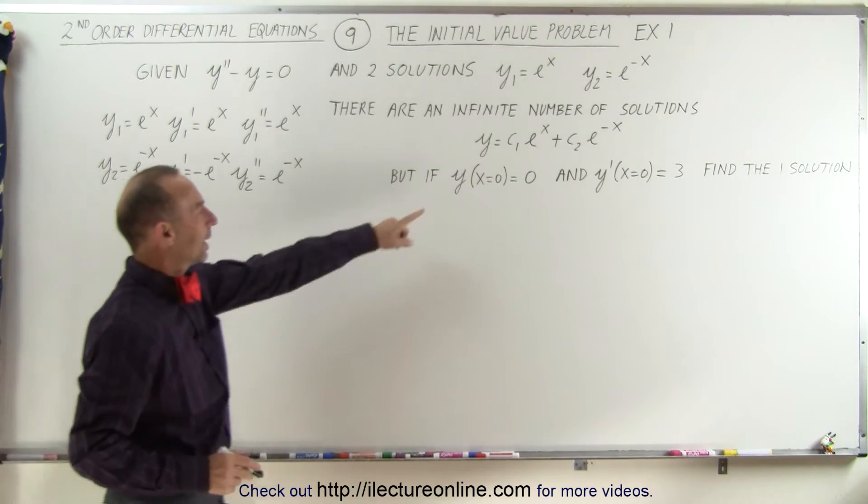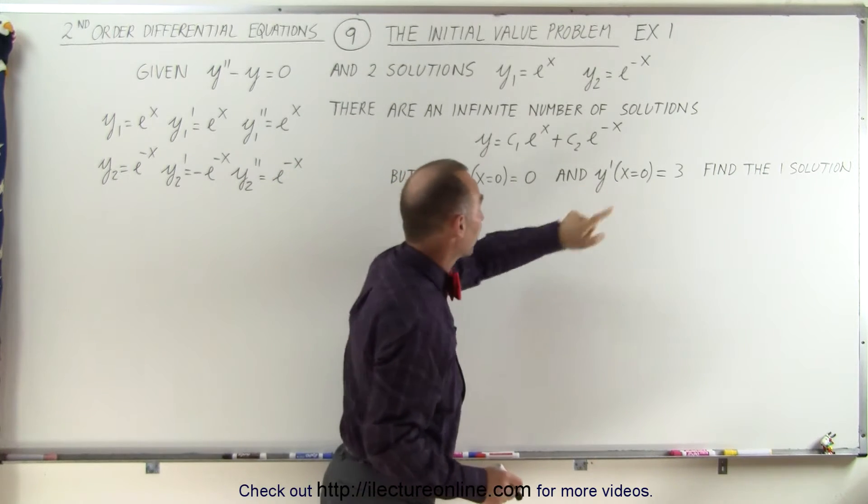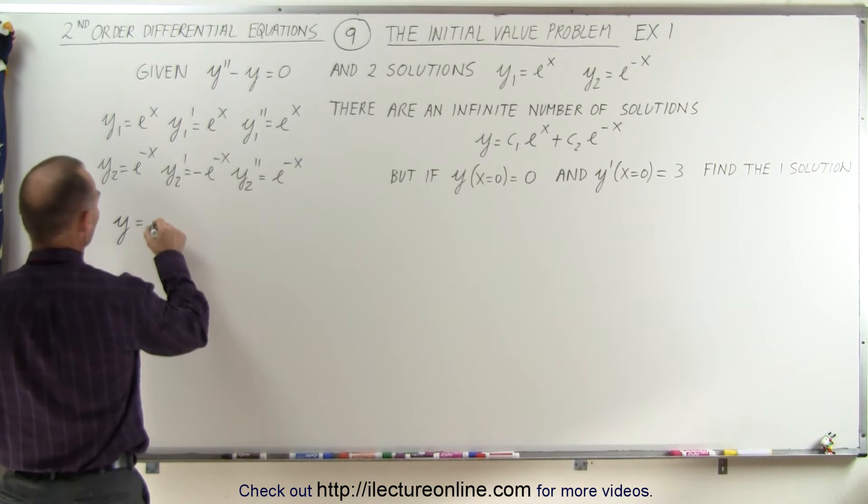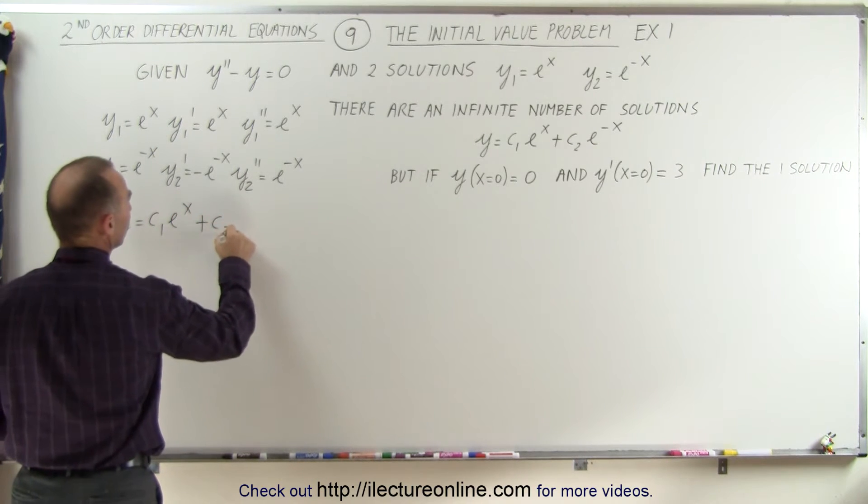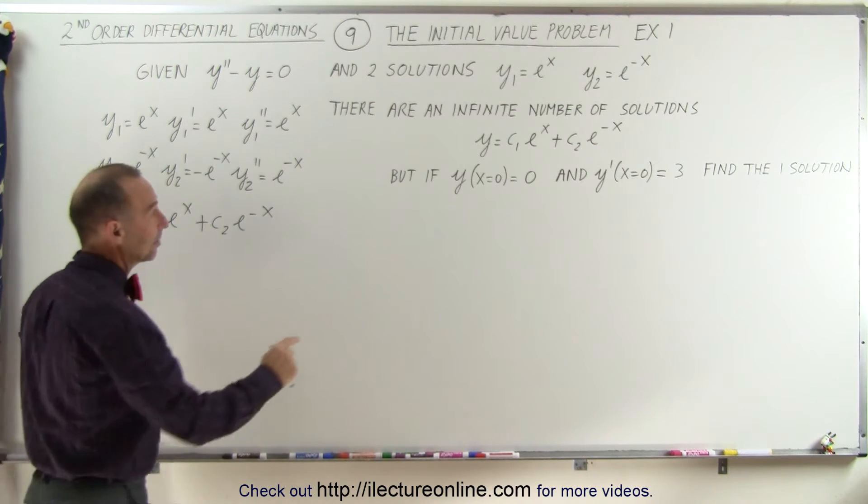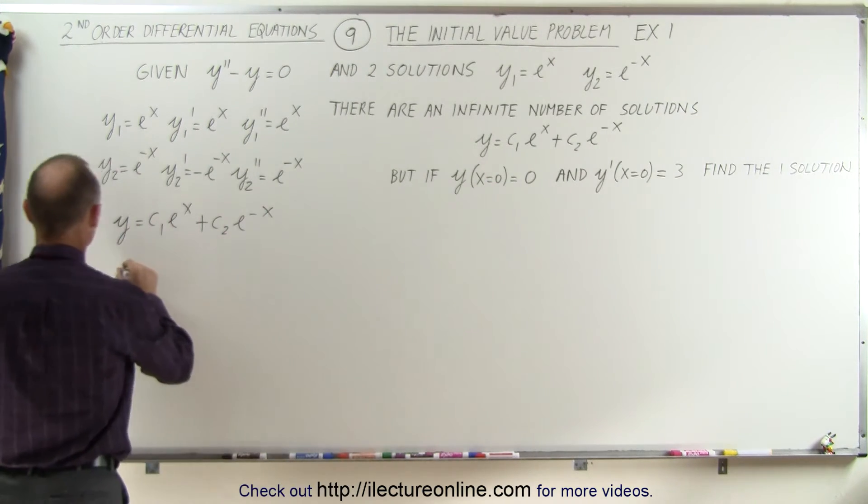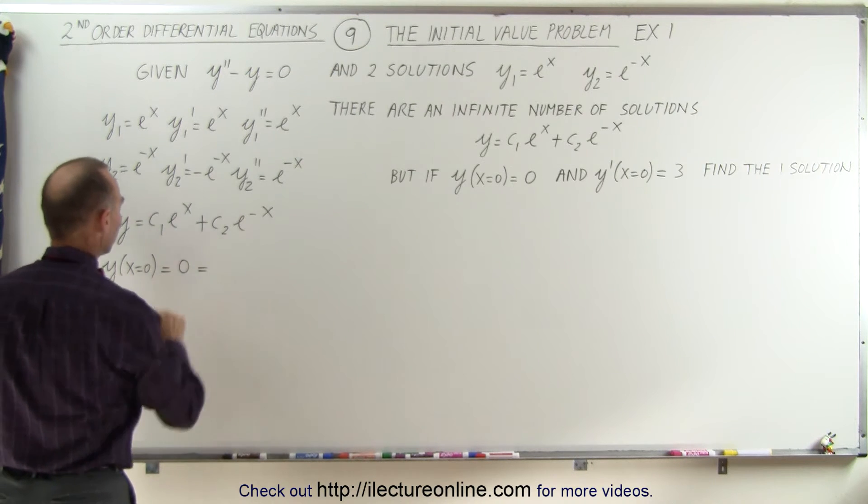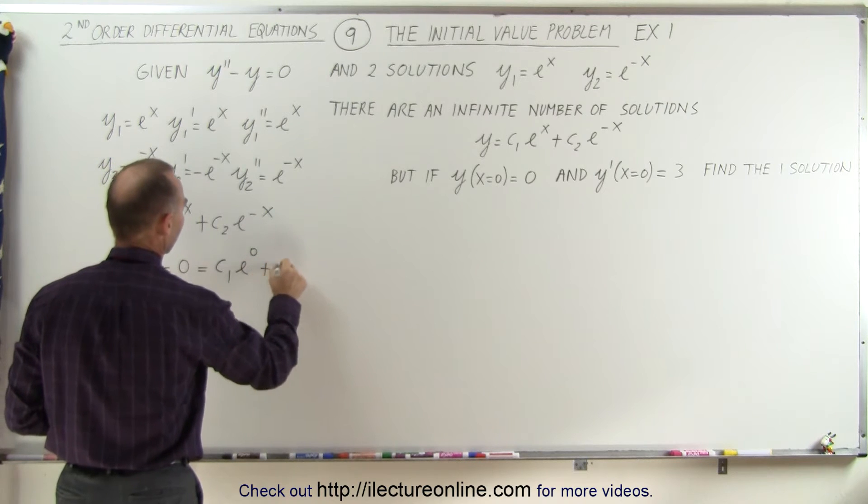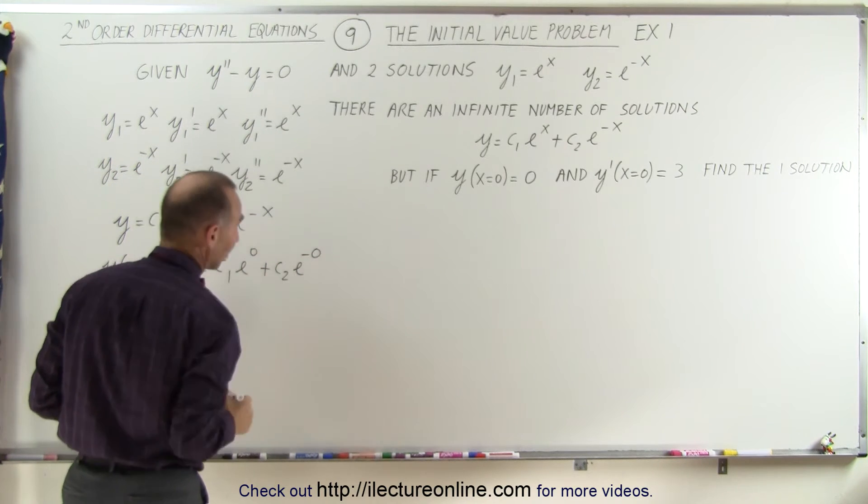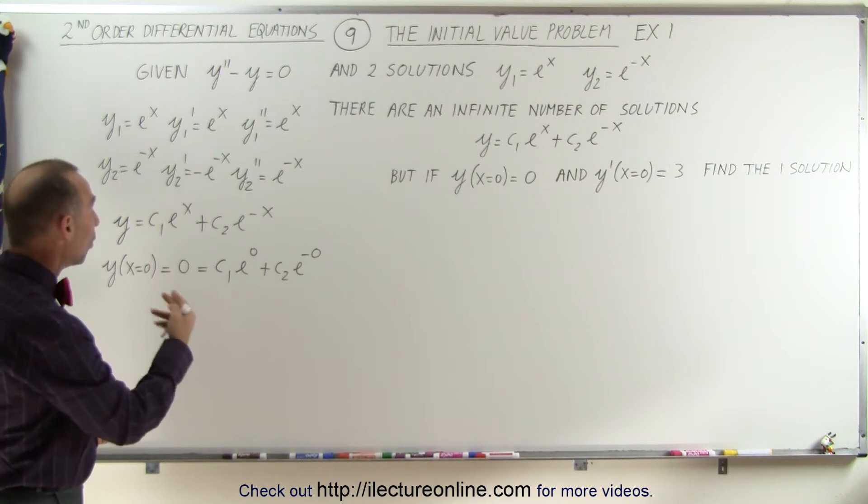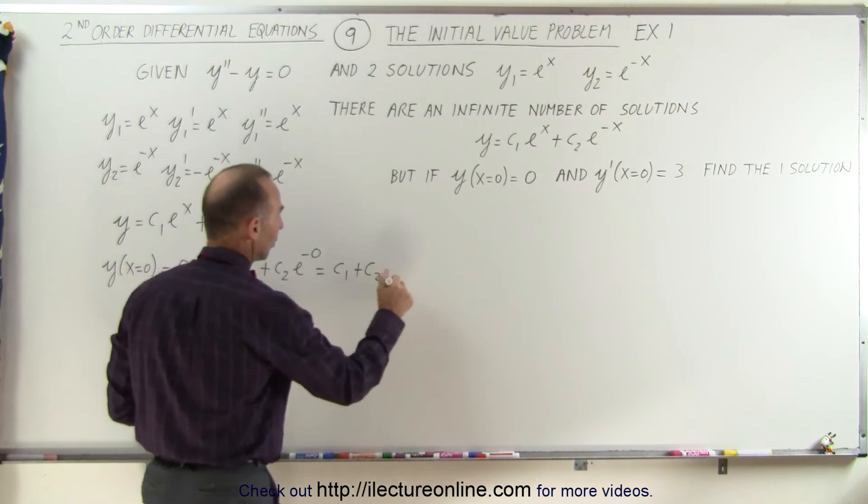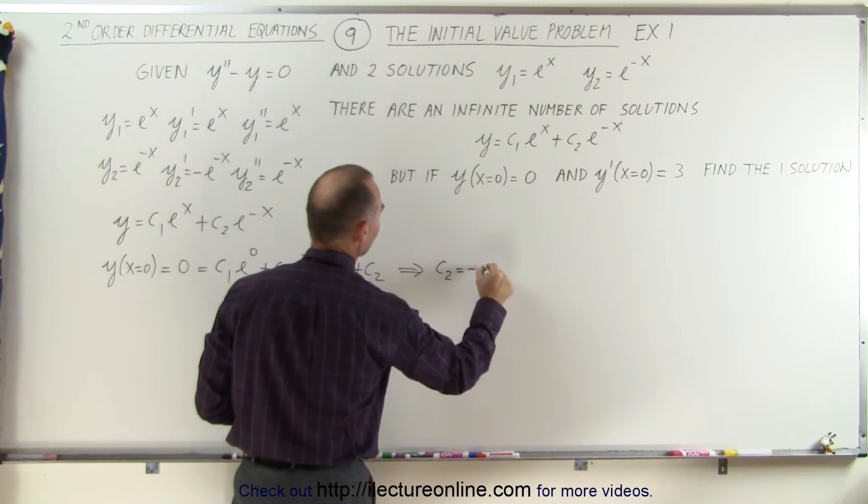Now we are going to apply these boundary conditions for the function and for the first derivative of the function using this general solution. So starting out with the function, we can write that y is equal to c1 e to the x plus c2 e to the minus x. But then we're going to let x equal 0 and set the whole function equal to 0. In other words, y when x is equal to 0 is equal to 0, and then when we plug those values for x into our general solution, we get c1 e to the 0 plus c2 e to the minus 0. And e to the 0 is going to be 1, and so that means this is equal to c1 plus c2. And since 0 is equal to c1 plus c2, we can then conclude that c2 is equal to the negative of c1.